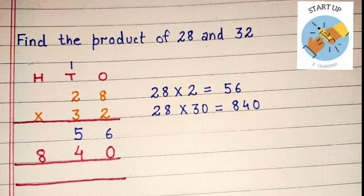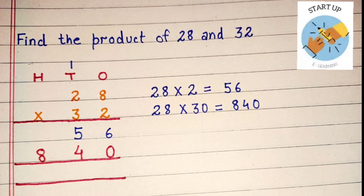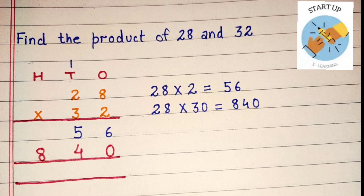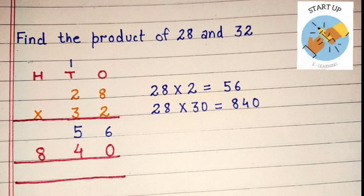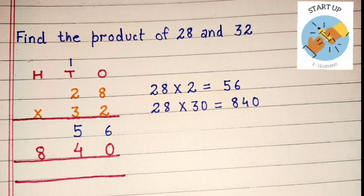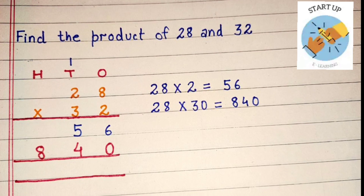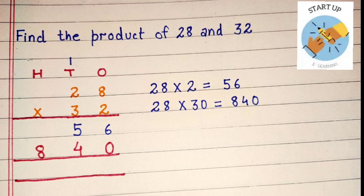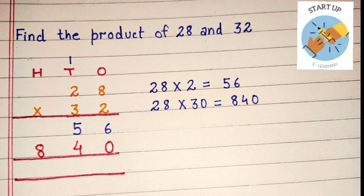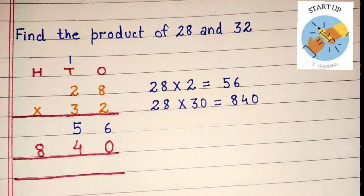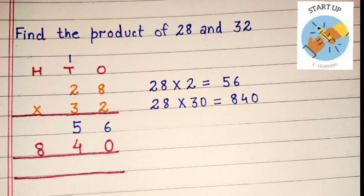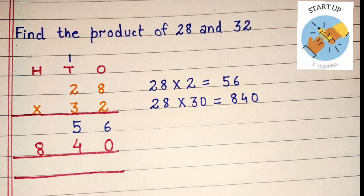Now, let's multiply 28 by 30. Why are we multiplying it by 30? Because it has 3 tens plus 2 ones. 28 multiplied by 30 is equal to 840. First of all, we will write 0 under 1's place, and then we will multiply 3 by 8. 3 eights are 24 — 4 will be written under 10's place and 2 will be carried on 100's. 3 twos are 6, plus 2 carry over, is equal to 8. So, another partial product is 840.